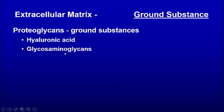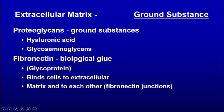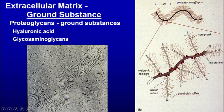Proteoglycans have hyaluronic acid and glycosaminoglycans. Fibronectin is a biological glue that binds cells to the extracellular matrix, and that's what we're going to see in the next couple of slides.